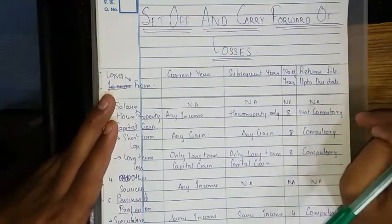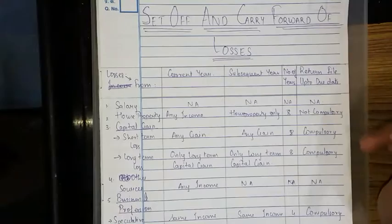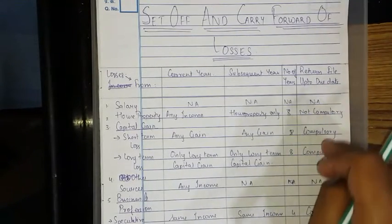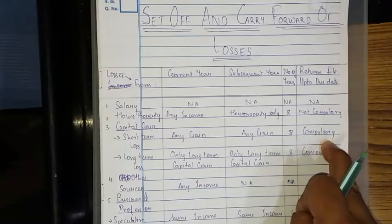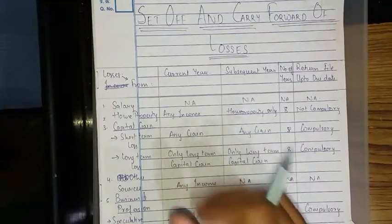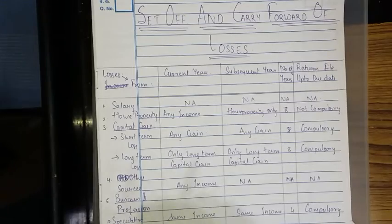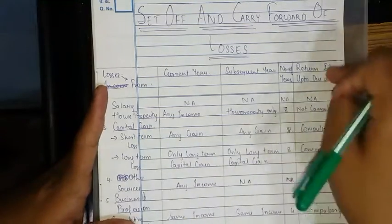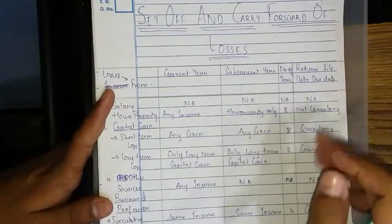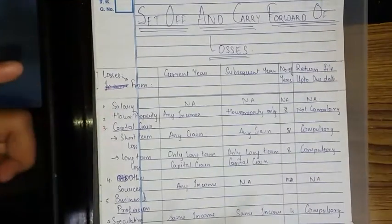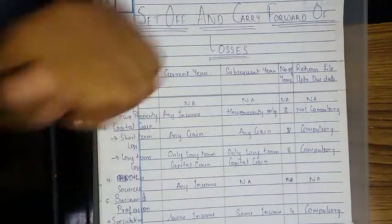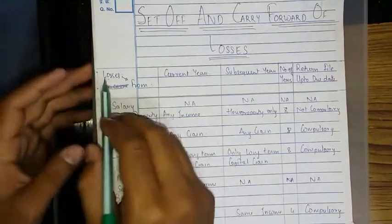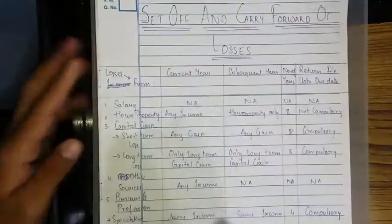Such carry forward is allowed for up to 8 years. Return filing up to the due date is not compulsory for house property loss. In other heads, return filing is compulsory — if not filed by the due date, the benefit of carry forward will not be given. But for house property loss, even if the assessee has not filed the return by the due date, they will still be given the advantage of carry forward.